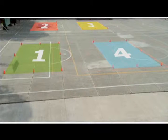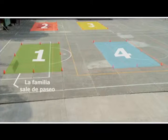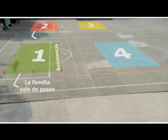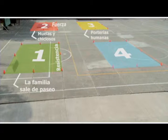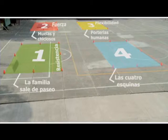En la estación 1 juegan La Familia Sale de Paseo y trabajan la resistencia. En la estación 2 juegan Muelas y Chiclosos y trabajan la fuerza. En la estación 3 juegan Porterías Humanas y trabajan la flexibilidad. Y en la estación 4 juegan Las Cuatro Esquinas y trabajan la velocidad.